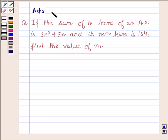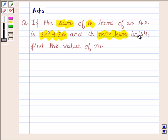Hi and welcome to the session. I am Asha and I am going to help you with the following question which says: If the sum of n terms of an AP is 3n² + 5n and its mth term is 164, find the value of m.